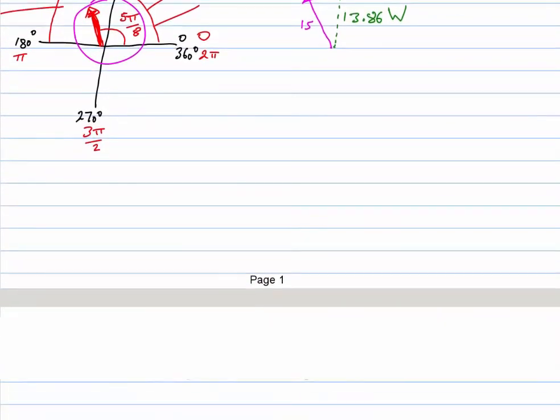Let's now have a look at a current signal. The current signal, let's use the letter i: i equals 20 sin(t + π/5).